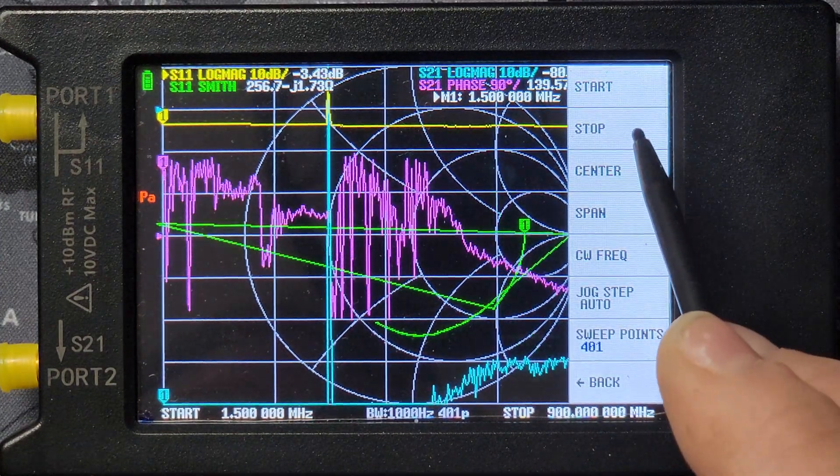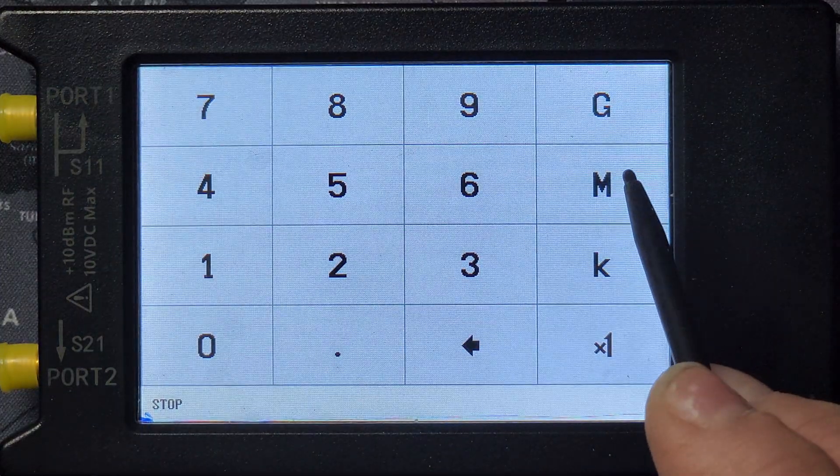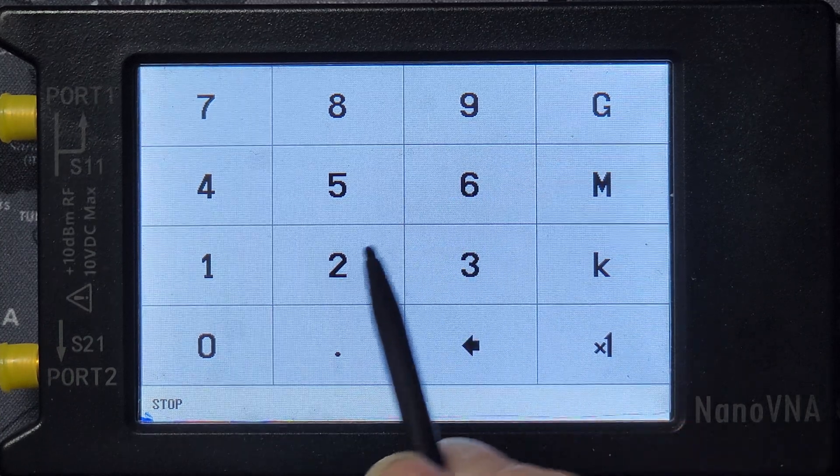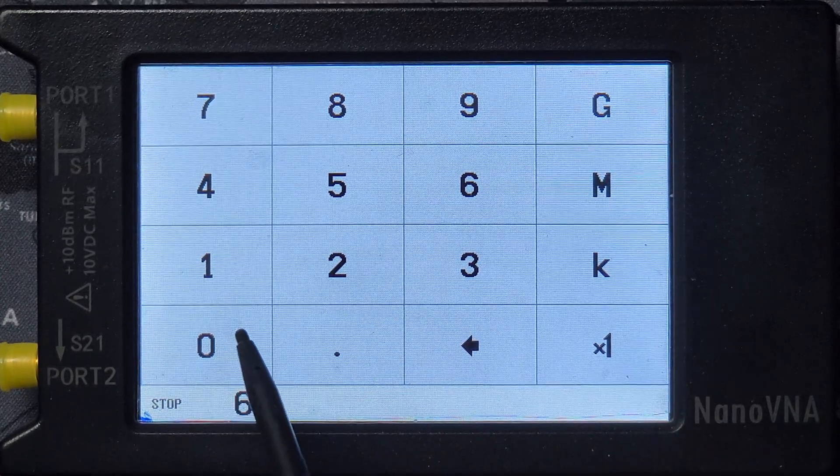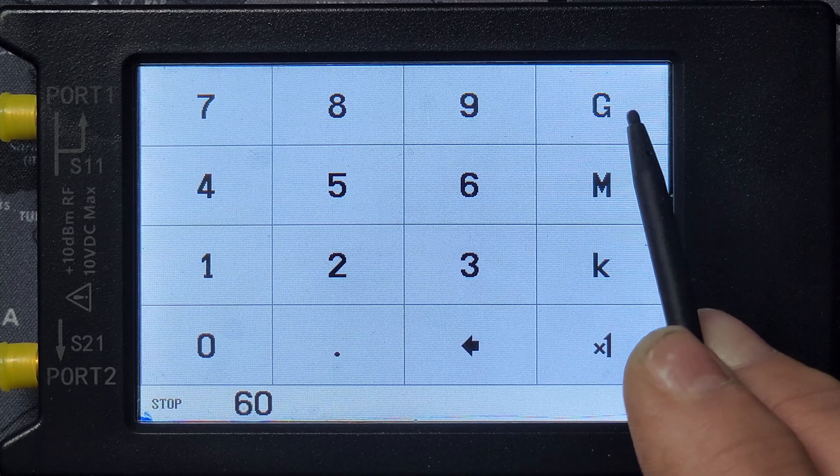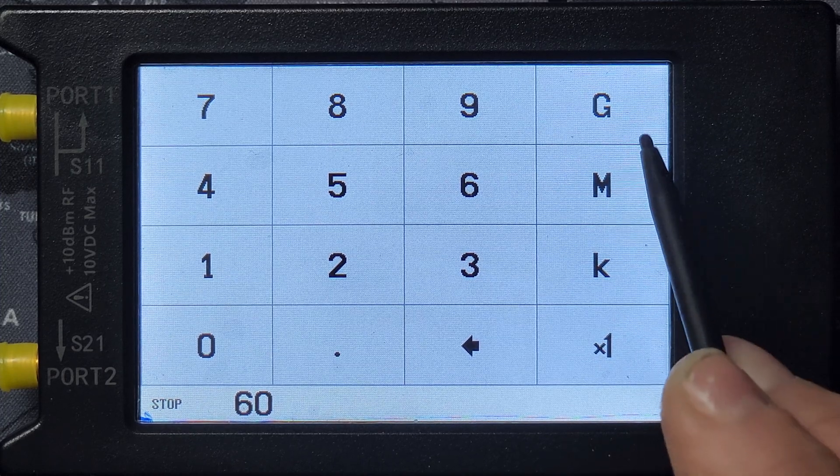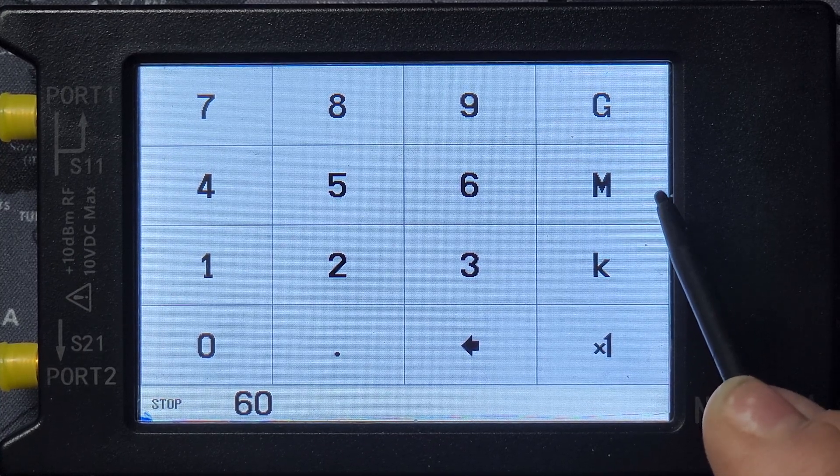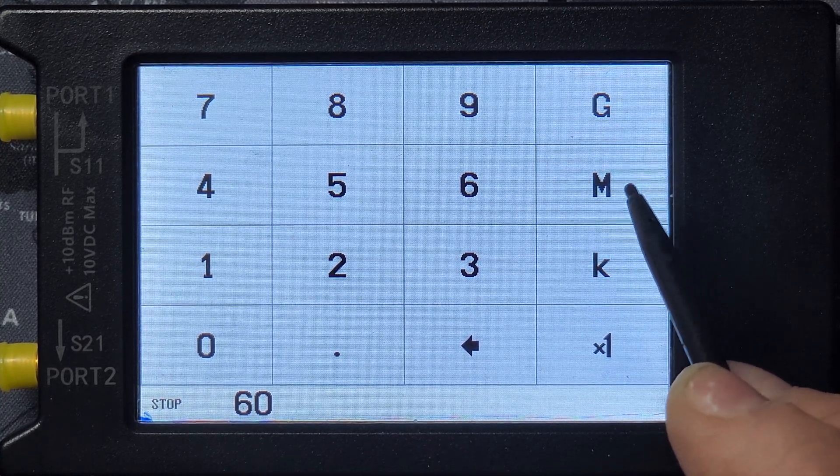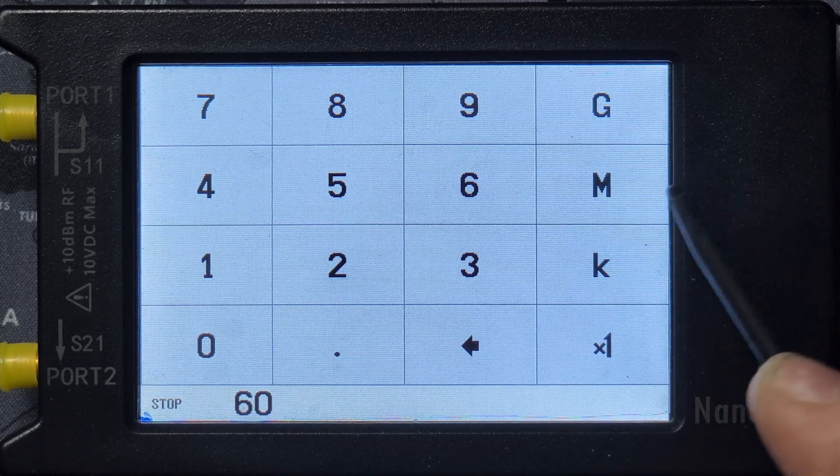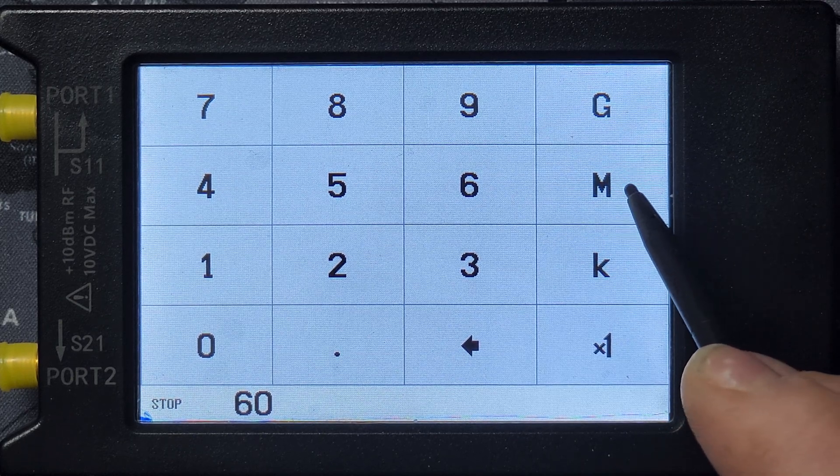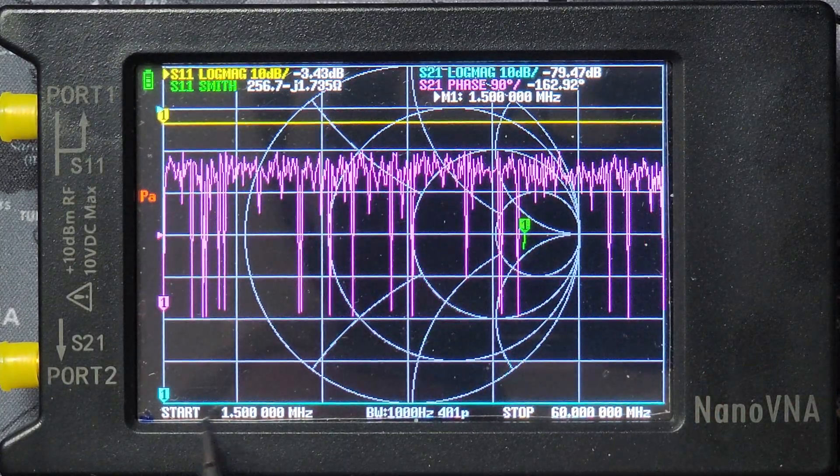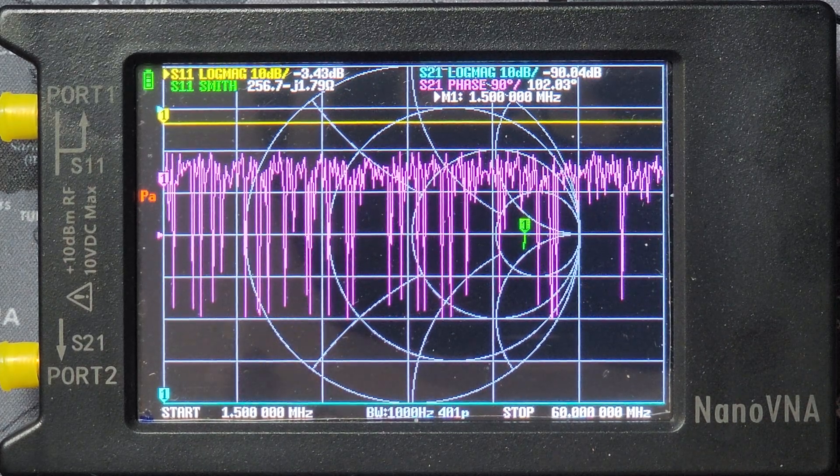And as you can see it changed down here, start frequency, 1.5 MHz. And what we want to do is do the stop frequency, which will be probably, let's just do 60 MHz. Now you see there's gigahertz, megahertz, kilohertz. You can even check out antennas for your wireless router in your home or business. But for today, we're just doing this for amateur radio. Let's click on 60 MHz. There we go. It changed.